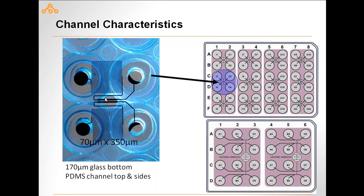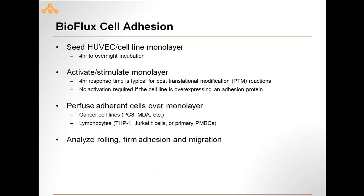This talk is specifically focused on circulating tumor cell research and how BioFlux can help. Looking at how the channels appear, there's an inlet and an outlet with a viewing area. A monolayer of cells — typically HUVECs but other adherent cell types — is established, and then a secondary cell type is perfused over it. This could be a CTC, a lymphocyte, or a stem cell where you want to observe the adhesion mechanism of the circulating cell binding to the vessel wall and migrating through.